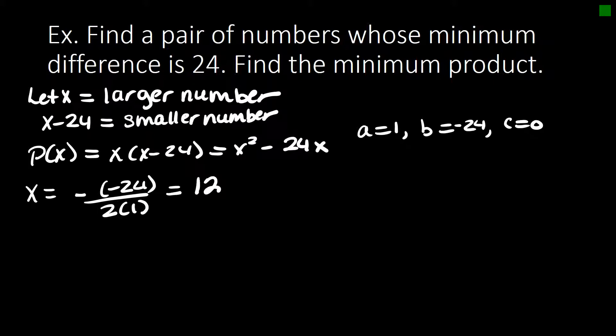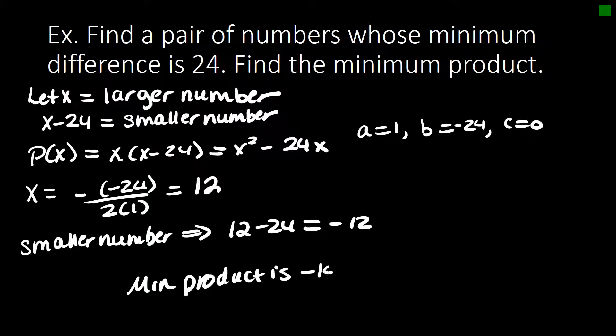So since 12 is the larger number, then the smaller number is going to be 12 minus 24 or negative 12. So those are the two numbers that we need to find for the minimum, but they want the minimum product. So the minimum product is going to be 12 times negative 12 or negative 144.